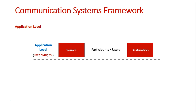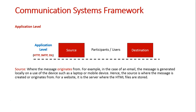The message is basically seen at the source and it is seen at the destination by the participants or the users. The source is where the message originates from. In the example of an email, the message is generated locally on the user's device such as a laptop or a mobile phone. You could either type it up on your phone or on a computer and create that message. Hence, the source is where the message is either created or where it originates from.